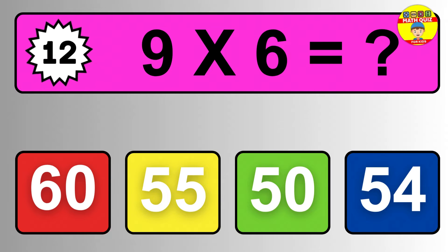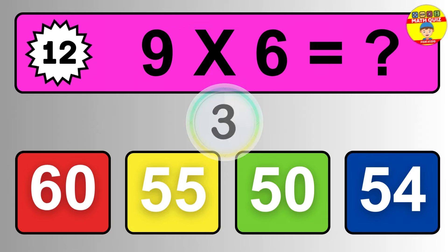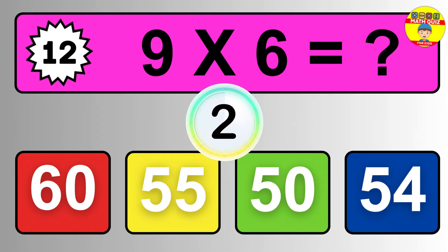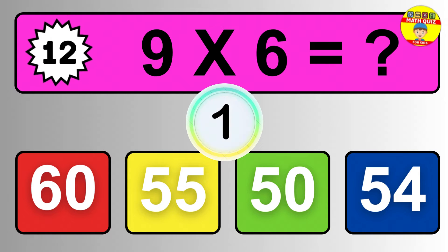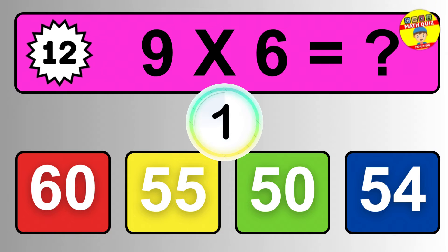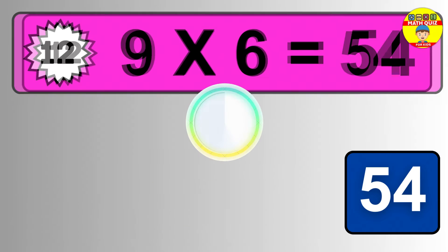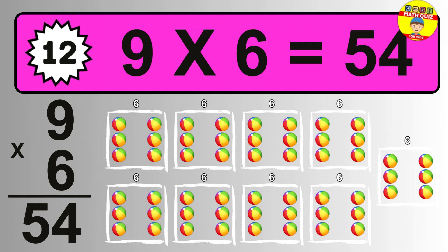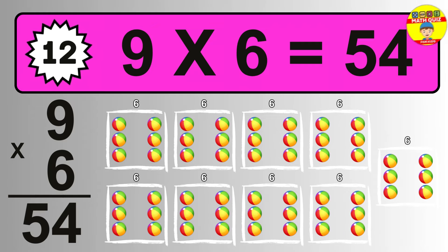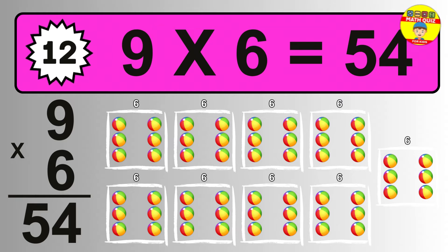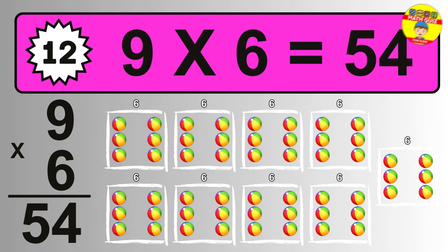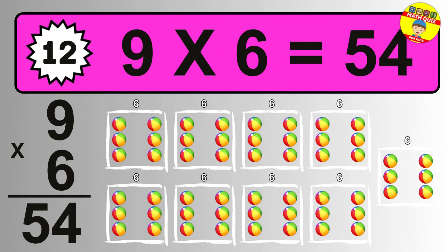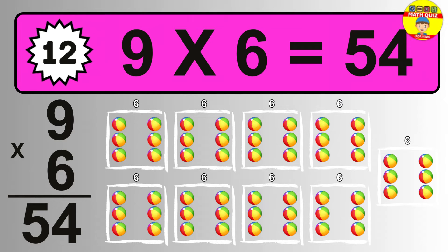Question twelve. Nine times six equals what? The answer is nine times six is fifty-four. To calculate, we have nine groups with six balls each one. So how many balls do we have? Fifty-four balls.